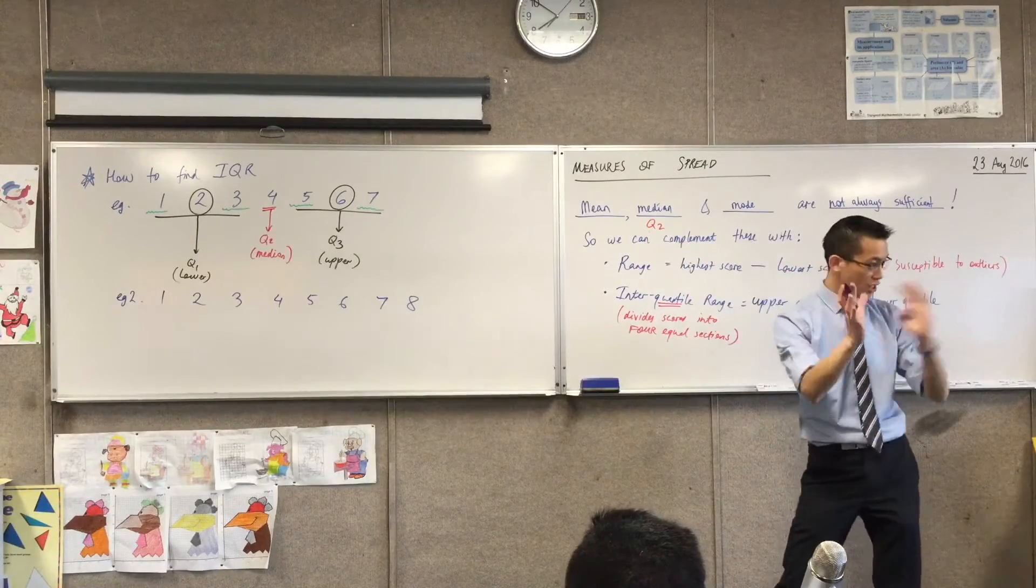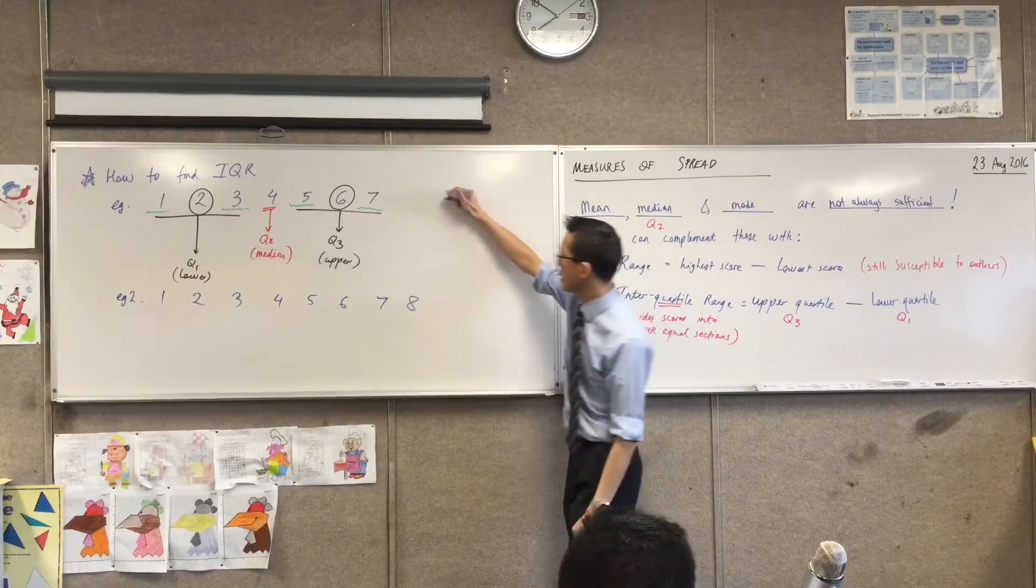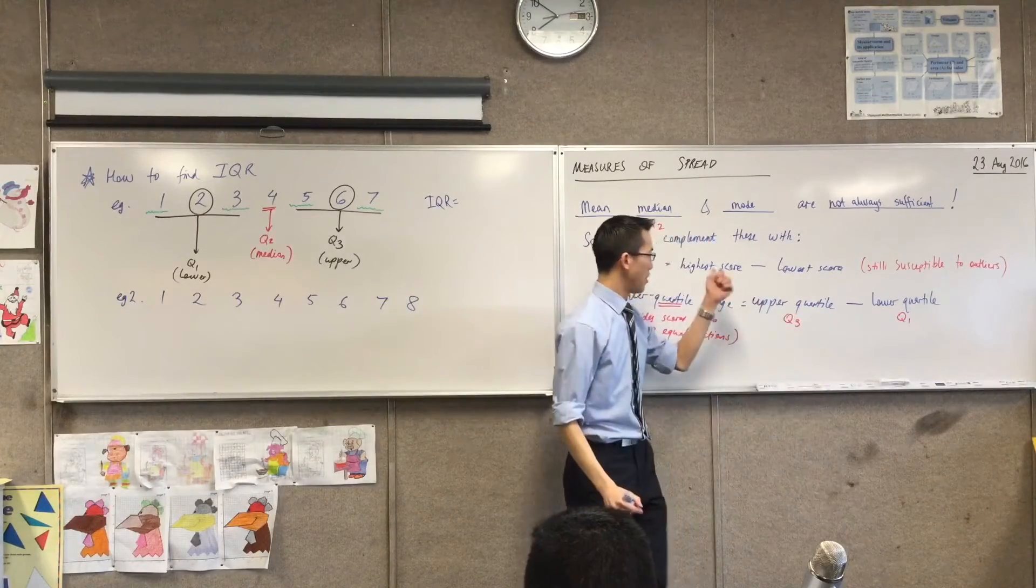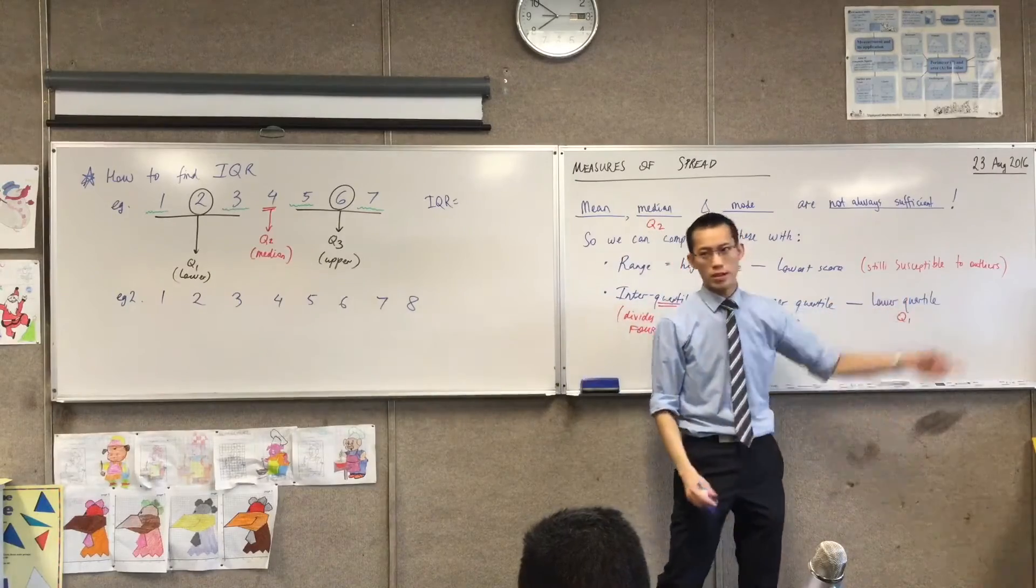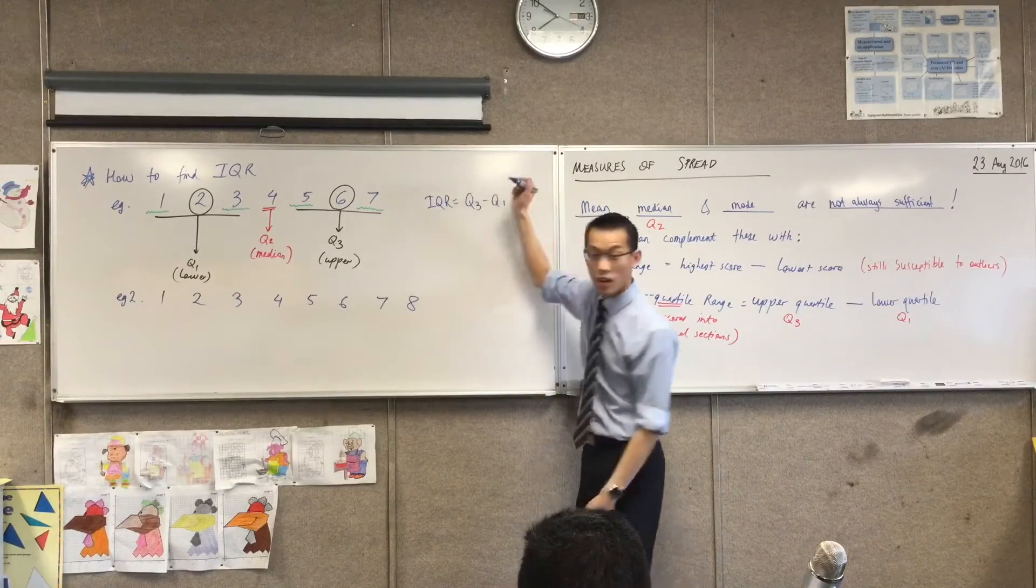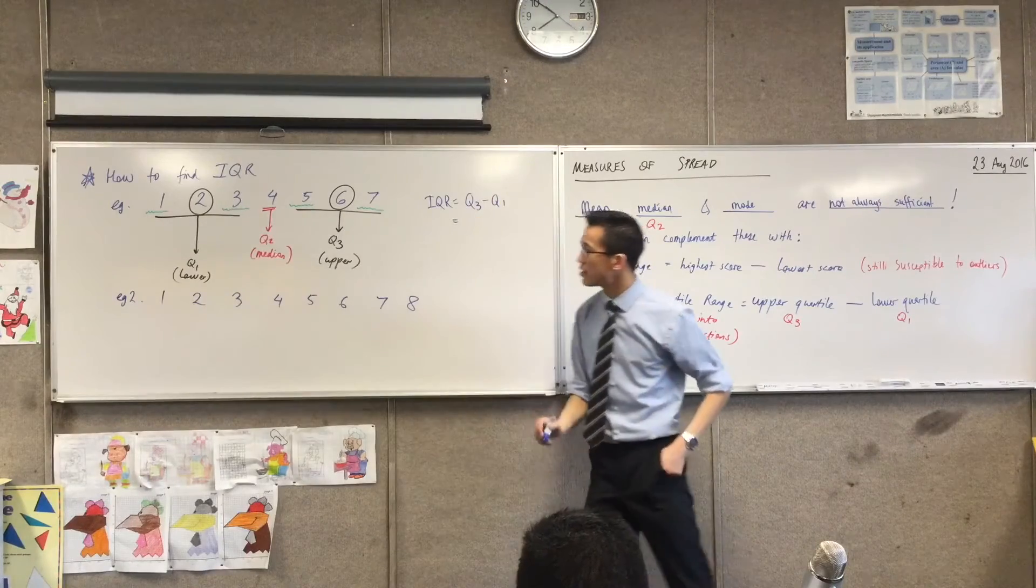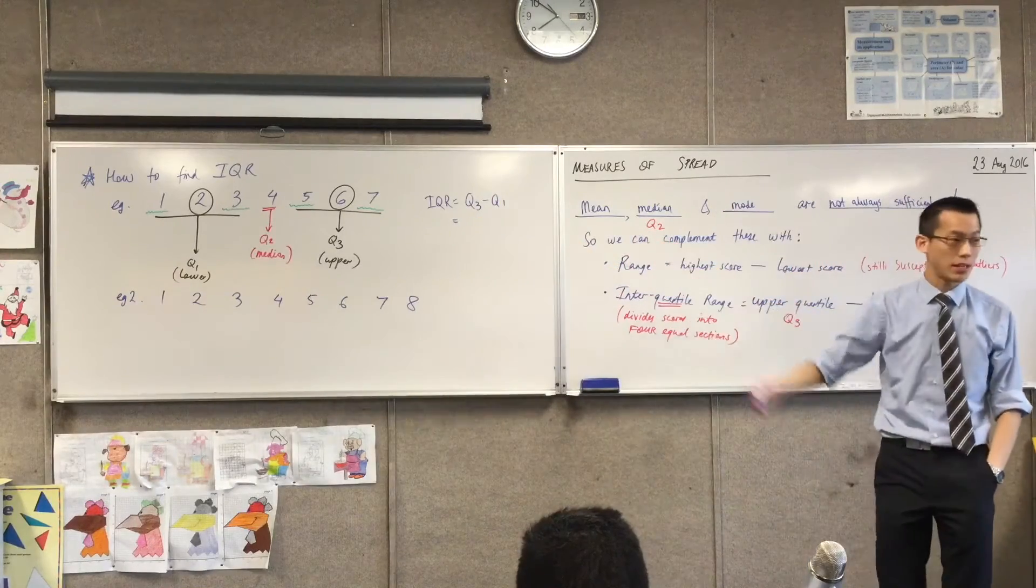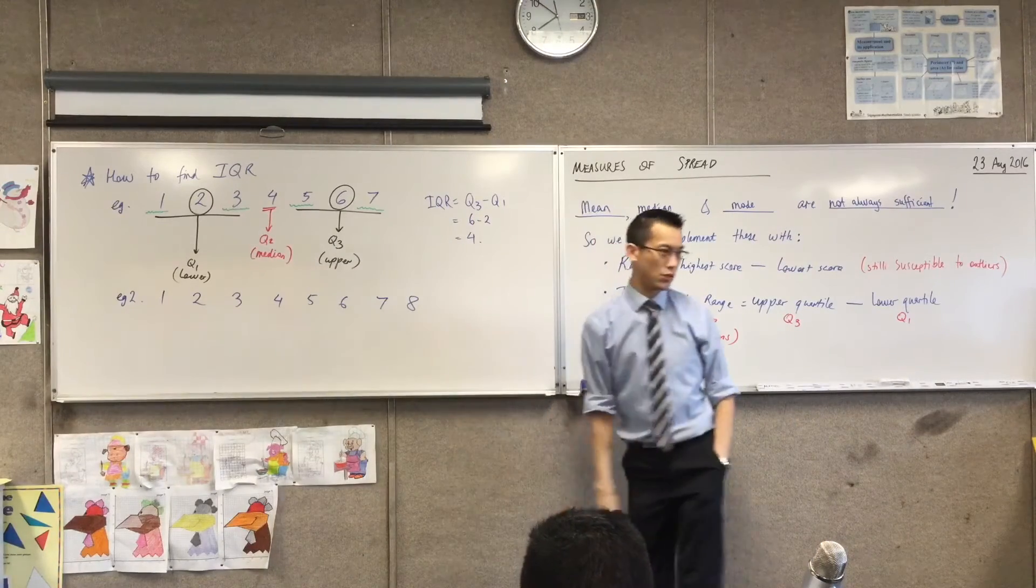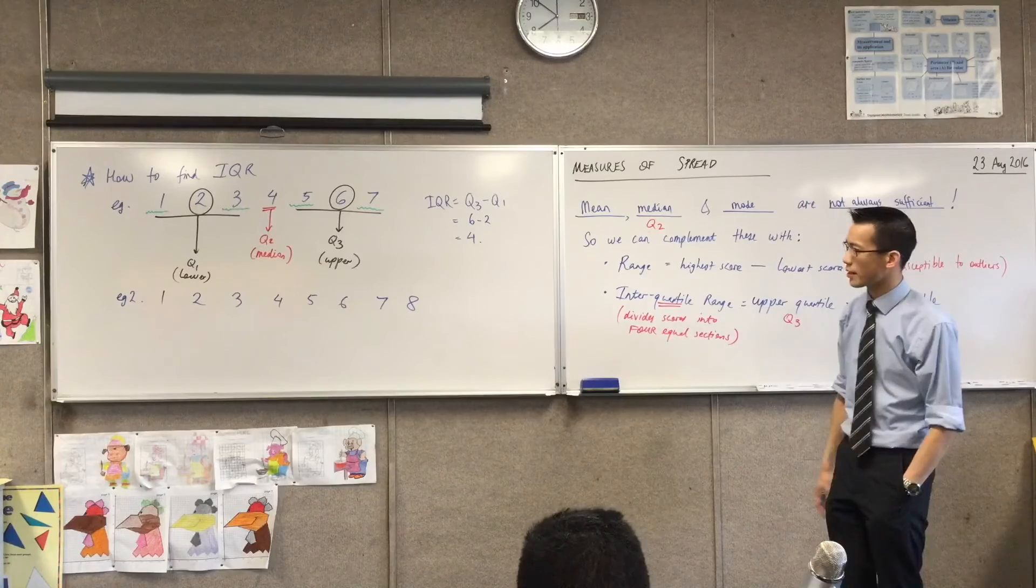Yeah. I just take the difference, right? So maybe on the right-hand side here, you want to actually calculate the interquartile range is the upper quartile take away the lower quartile. You don't have to keep on writing those. We can use the abbreviation, upper take away lower. In this case, you can see I've circled them in black. So it's 6 take away 2, and that gives you the actual interquartile range.